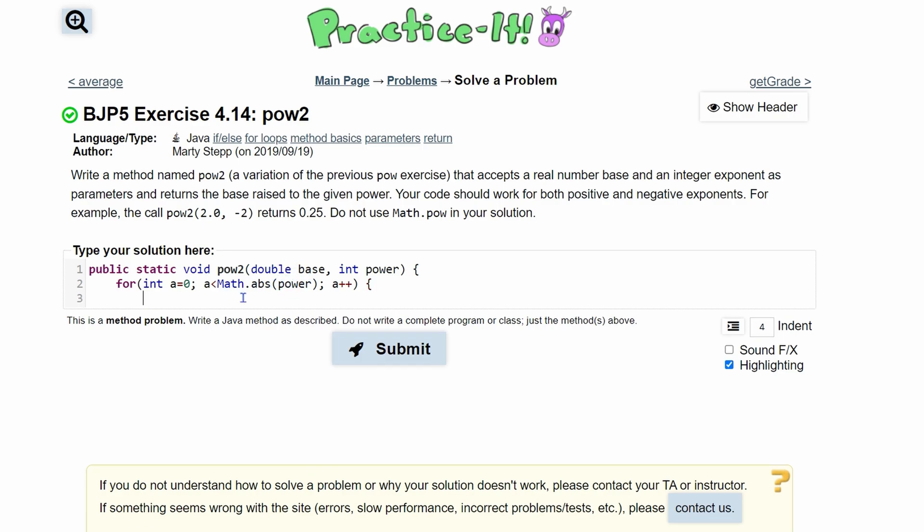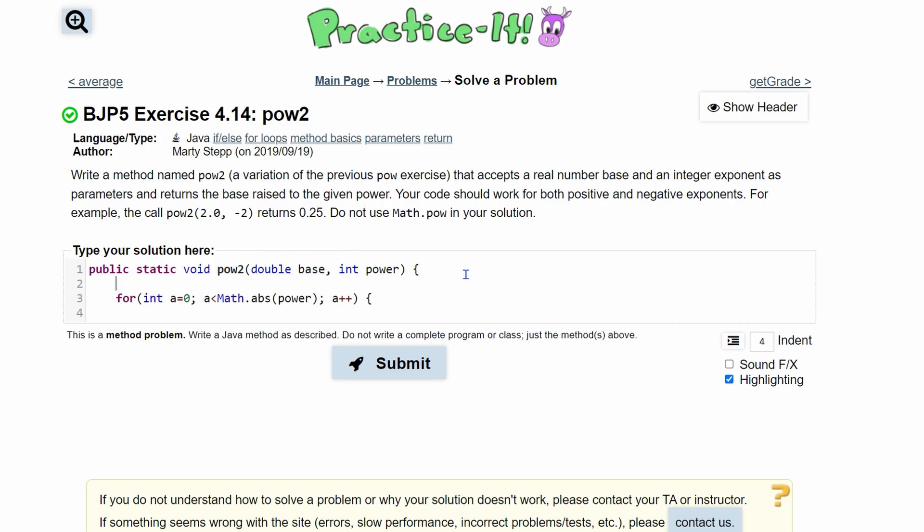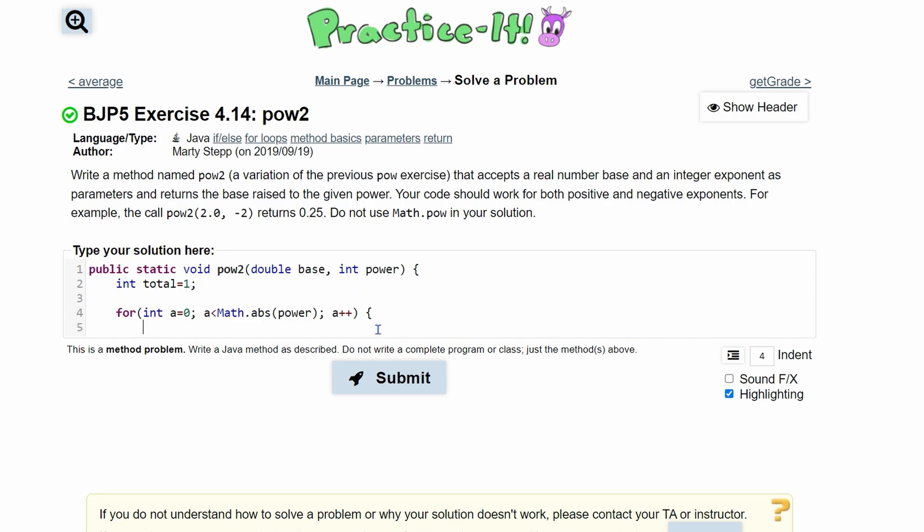Inside of this for loop, we need to store the value that we are going to be multiplying every single time. We can't be multiplying into our base. So we're going to do int, and we can do, we'll just say total, and we'll set it equal to 1 for now. And then in our for loop, we are going to have total times equals, and then we're going to multiply our base over here.